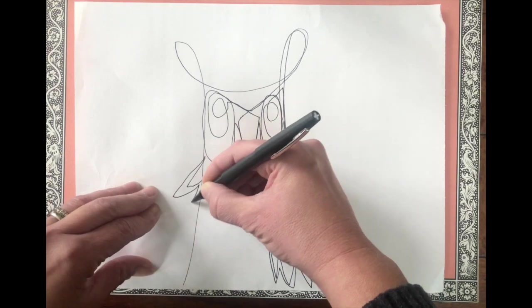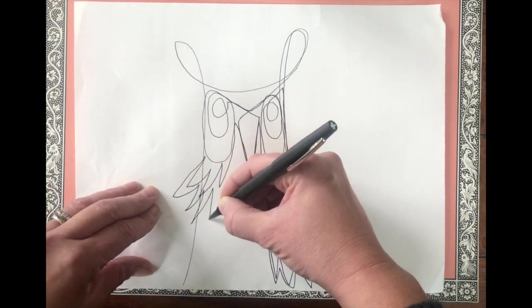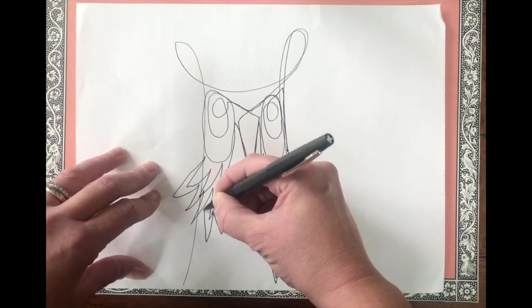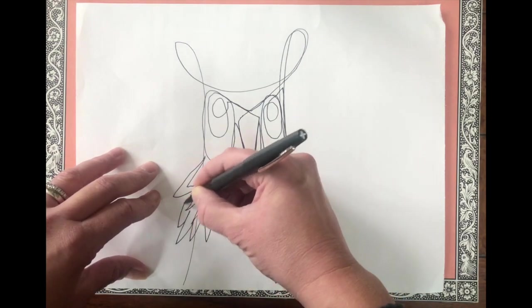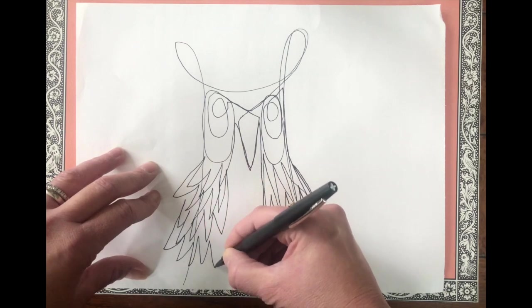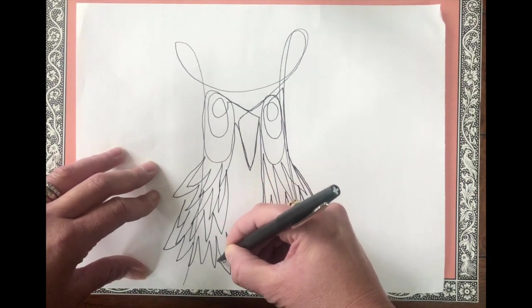I'm kind of stretching those feathers outside of the actual owl body that I created. That's okay. Zigzag lines, going up and down, not picking up my marker, going all the way down to the end.